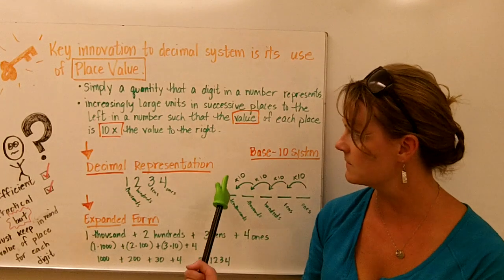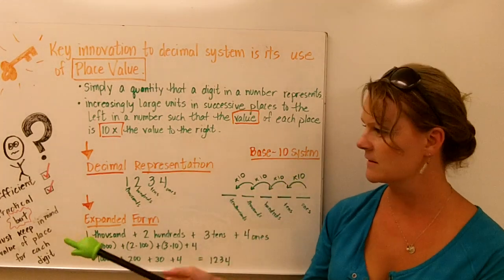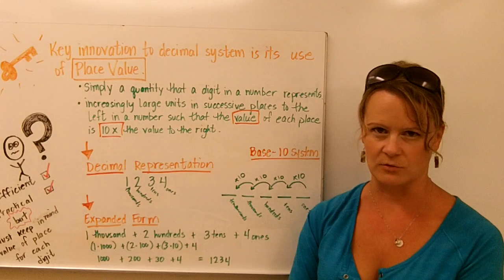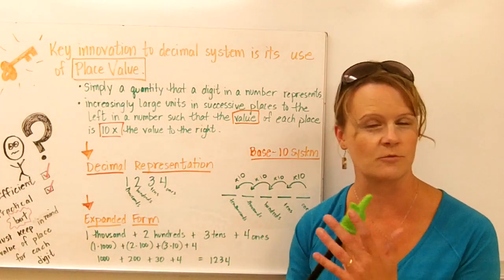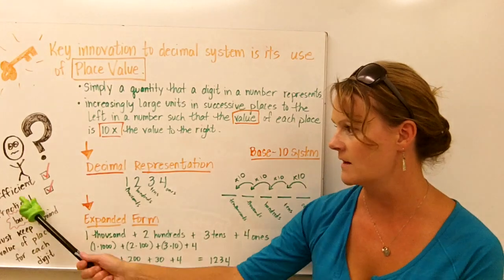So yes, the decimal system, the base ten system, is efficient. Absolutely, it's much more efficient than the other systems, the Egyptian system, the Roman numeral system, and of course the tally system. And it's very practical.